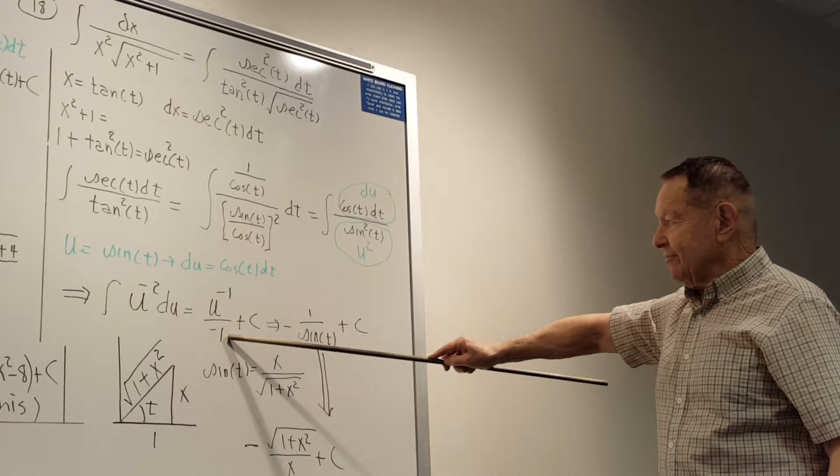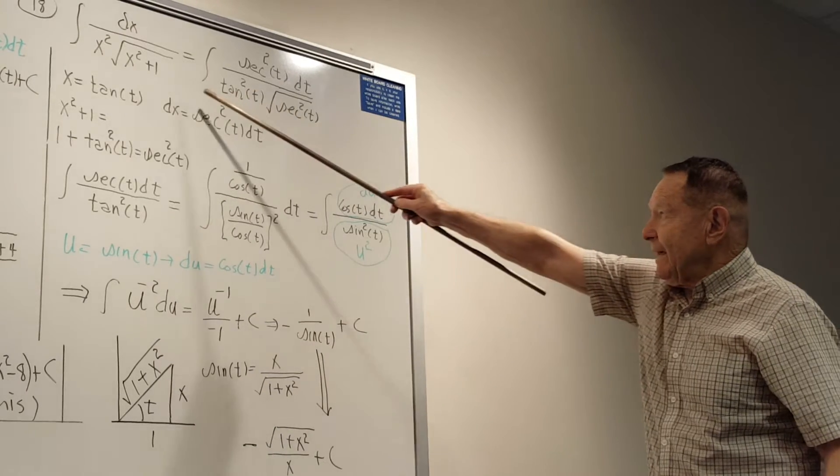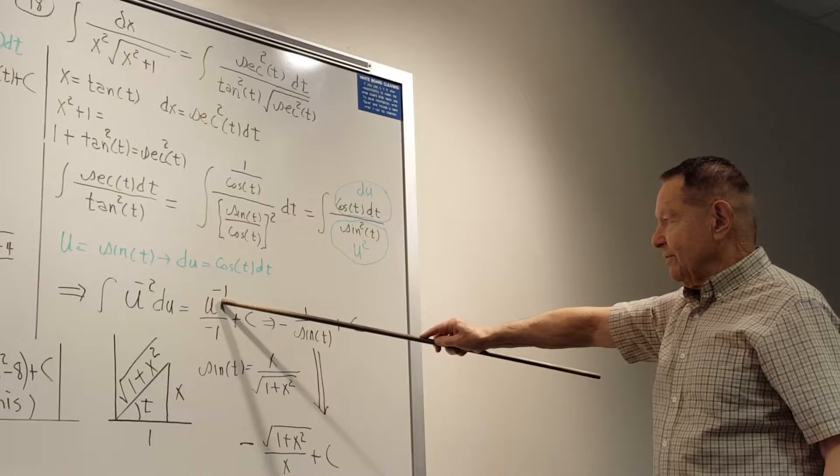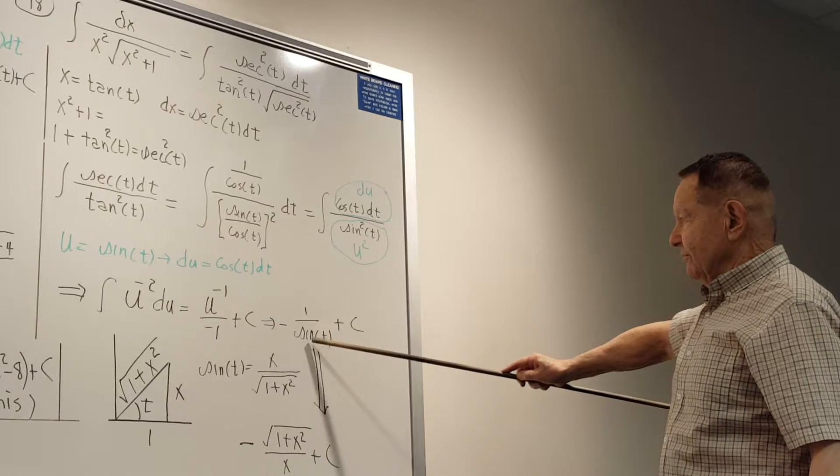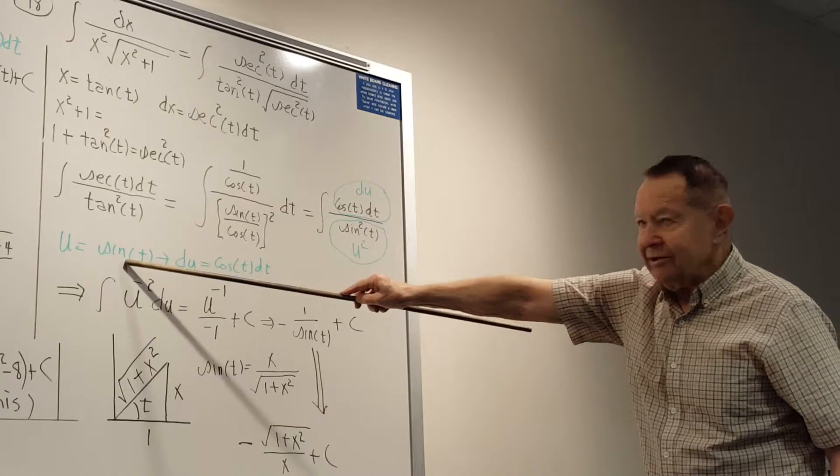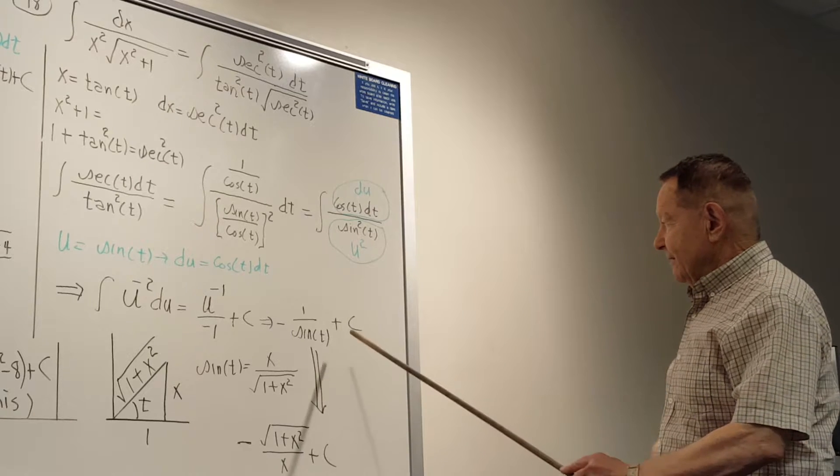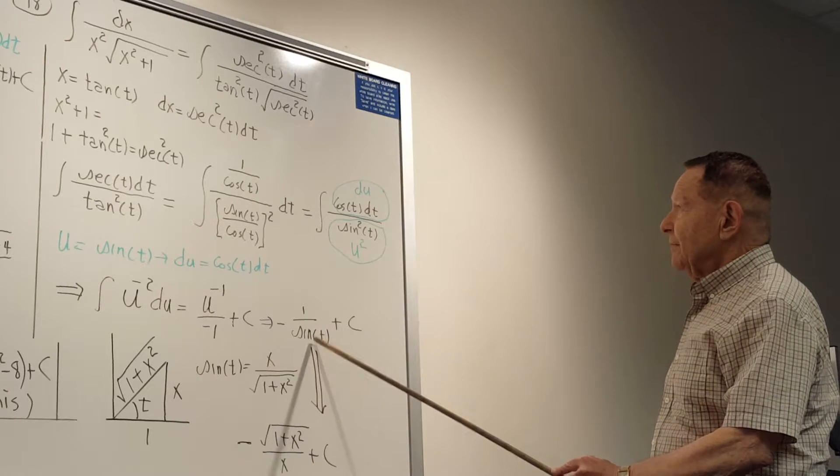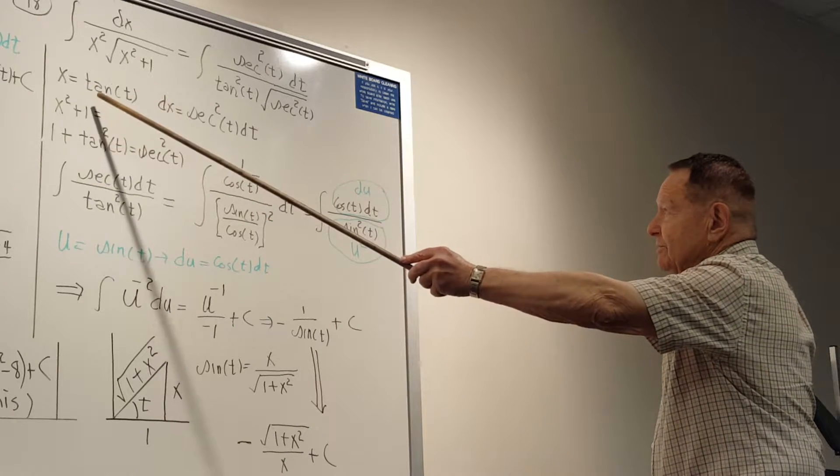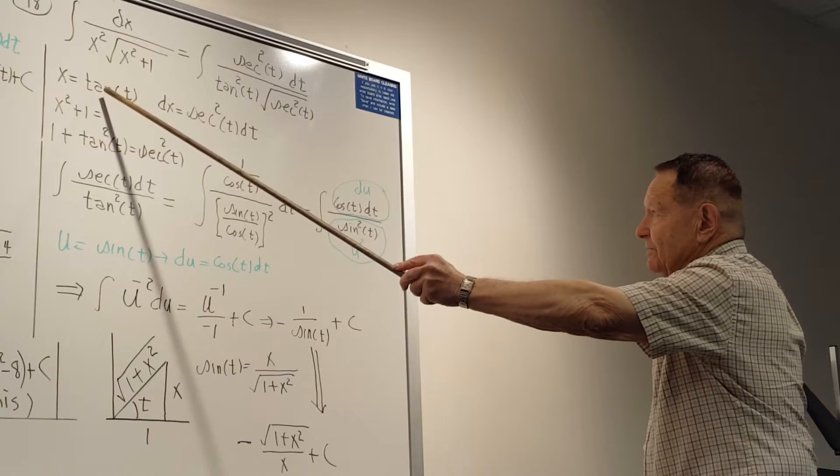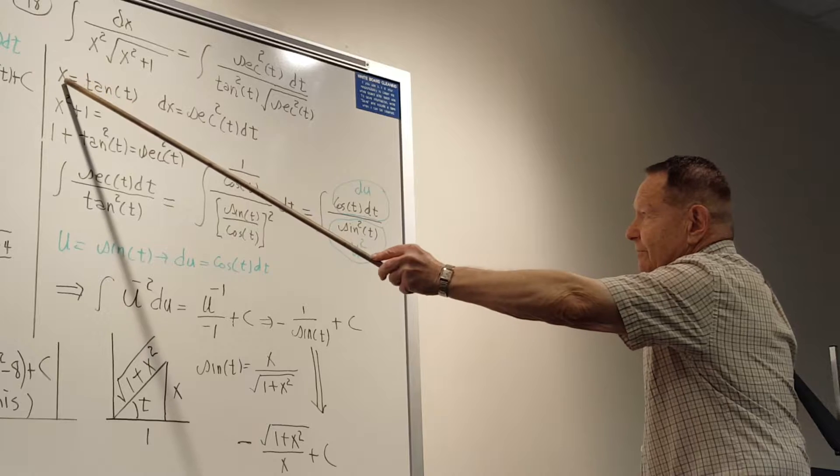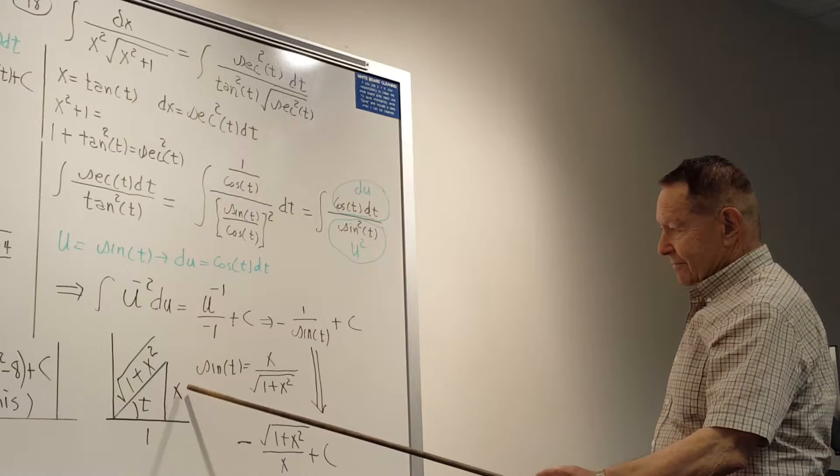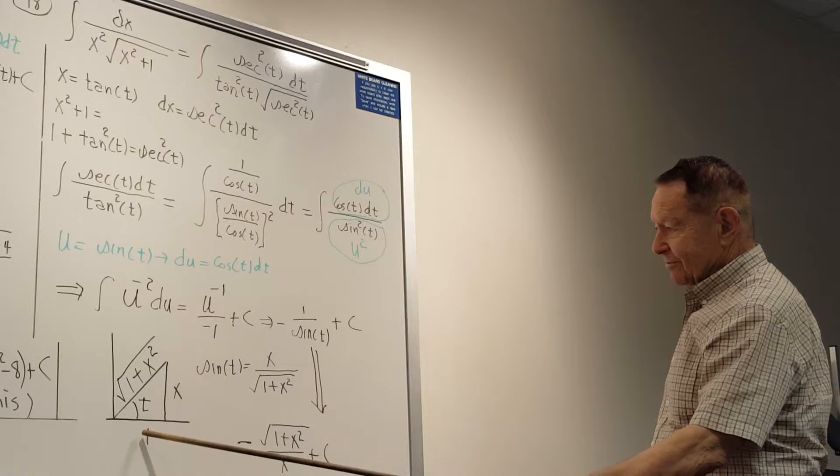Now you still have to get back to your x finally. So you have minus one over u, which is sine. And now to connect to x, remember that you said that tangent t was x over one.